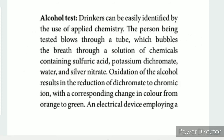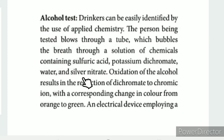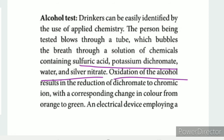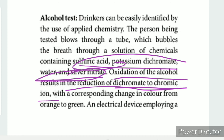Next is the alcohol test. This is applied chemistry used in real life, as seen in cinema. The person being tested blows through a tube. This bubbles the breath through a solution of chemicals containing sulfuric acid, potassium dichromate, water, and silver nitrate. This is the oxidation of alcohol. The oxidation of alcohol results in the reduction of dichromate to chromic acid — alcohol is oxidized instead of chromic acid being formed.